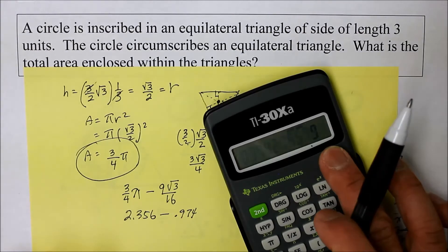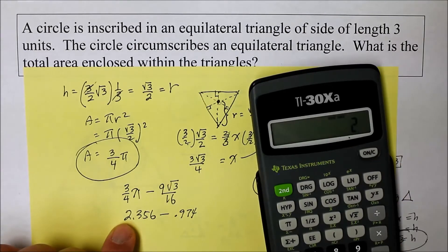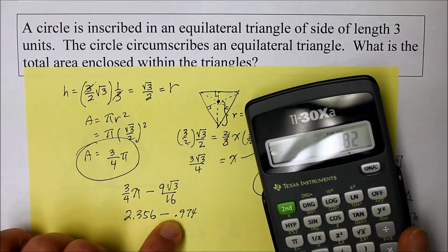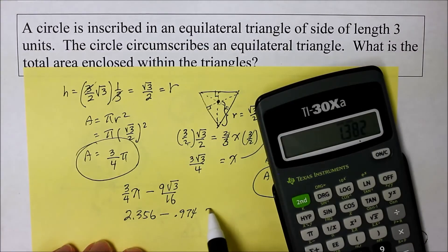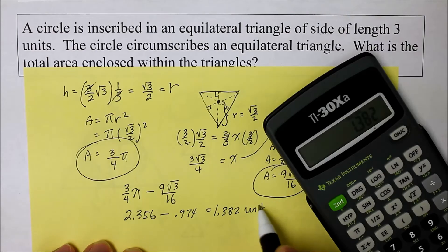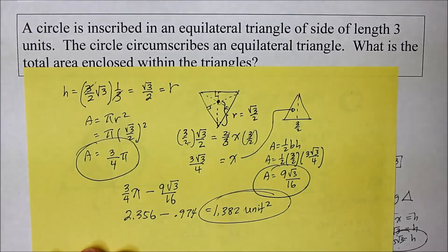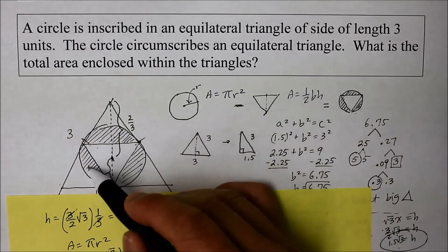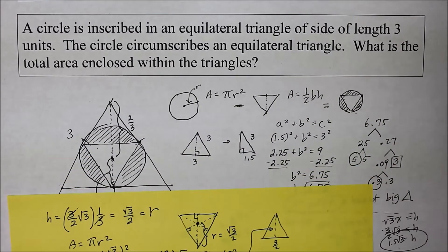So now, let's subtract 2.356 minus 0.974. We're going to get 1.382 unit squared remaining for this shaded region. Yeah.